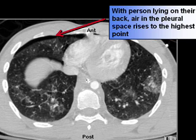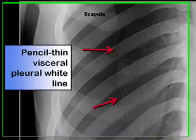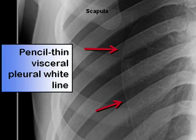Remember that with the person lying on their back, which is how most CT scans are obtained, air will rise in the pleural space to the highest point, which will be just underneath the anterior chest wall, as evidenced by this black crescent. On conventional radiography, pneumothoraxes must demonstrate the pencil-thin visceral pleural white line, which is the visceral pleura separated from the parietal pleura by air in the pleural space.